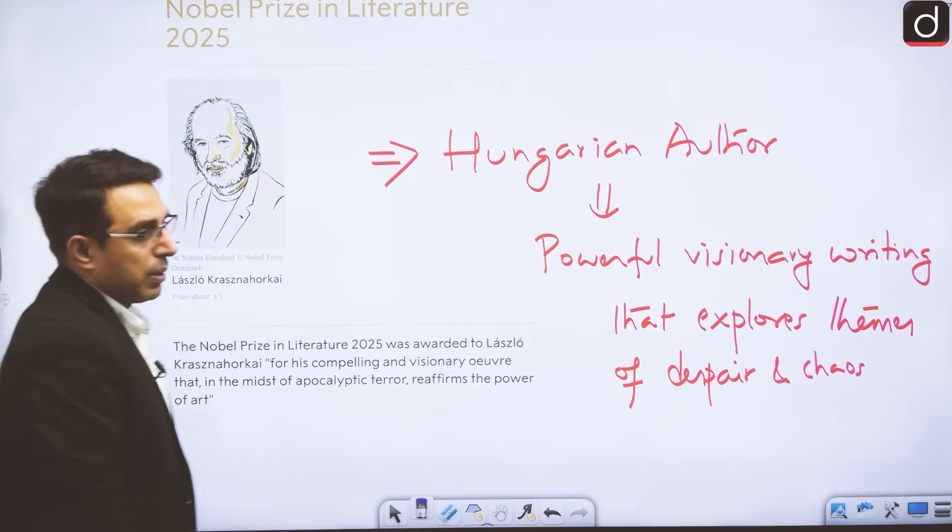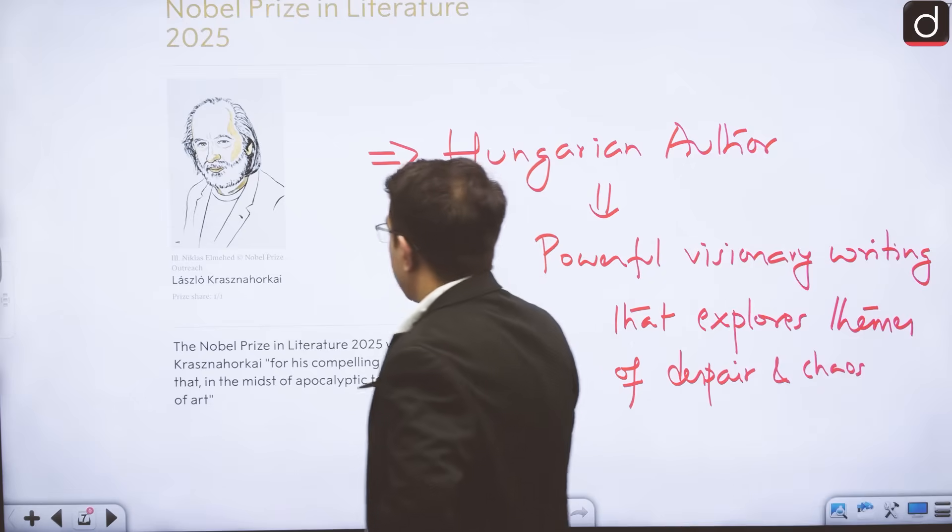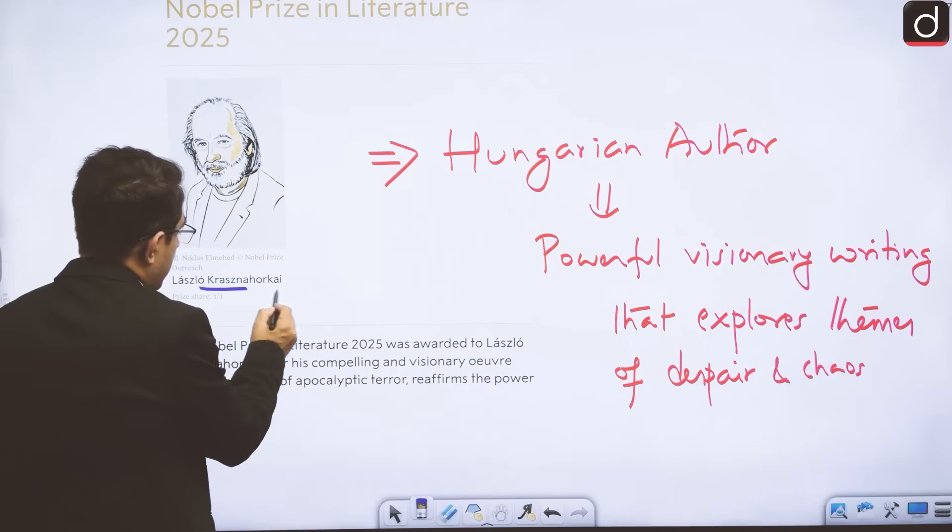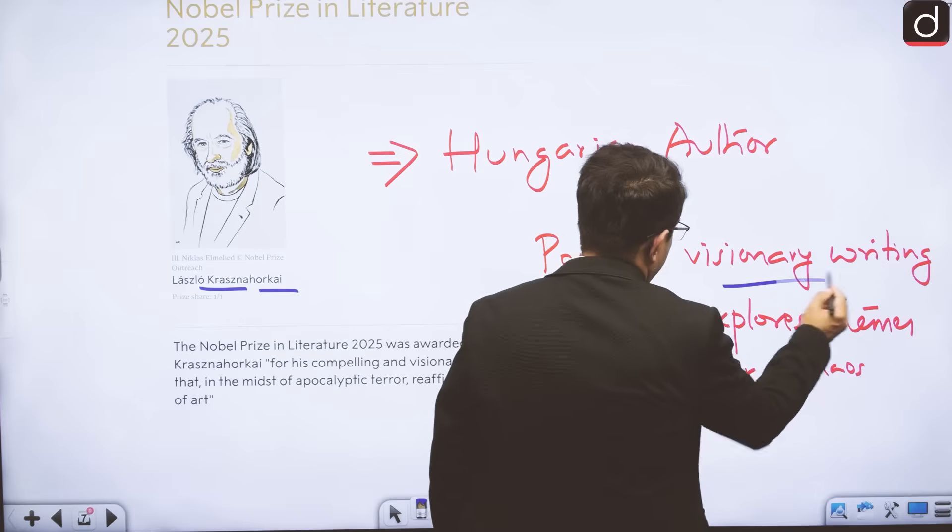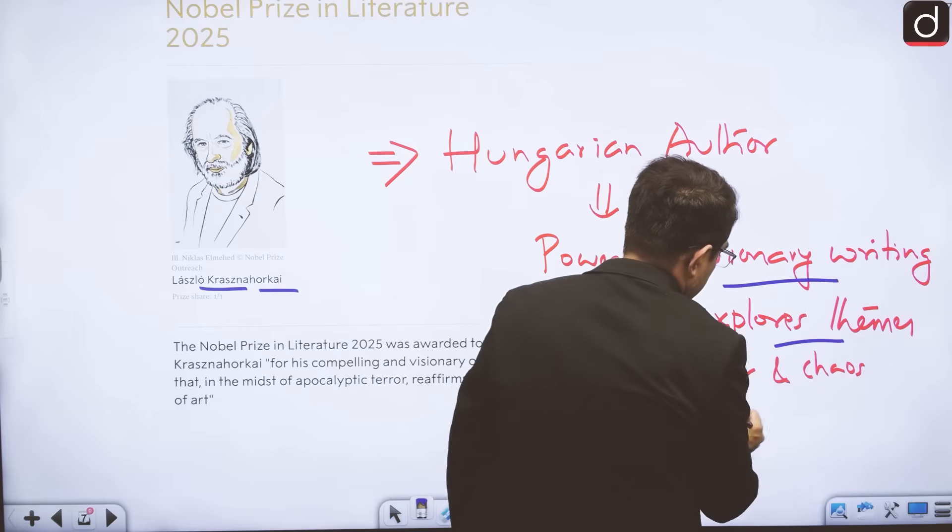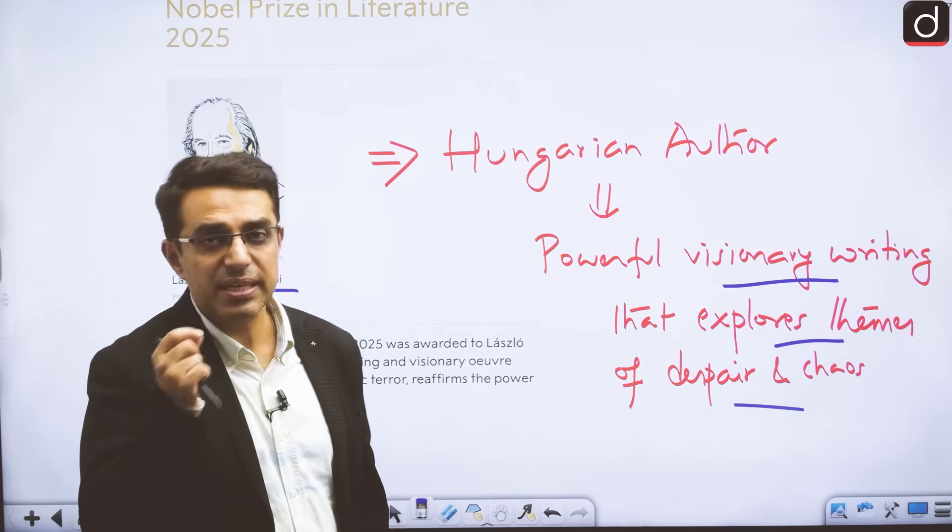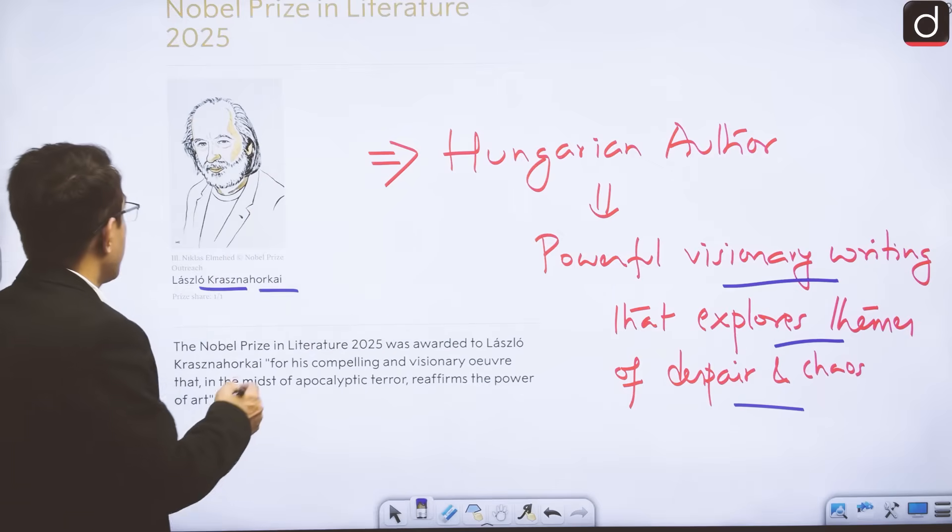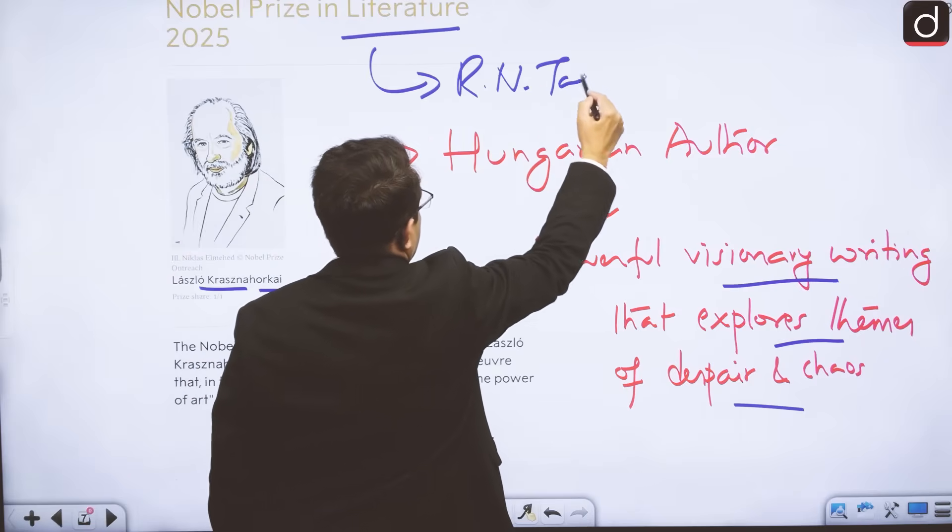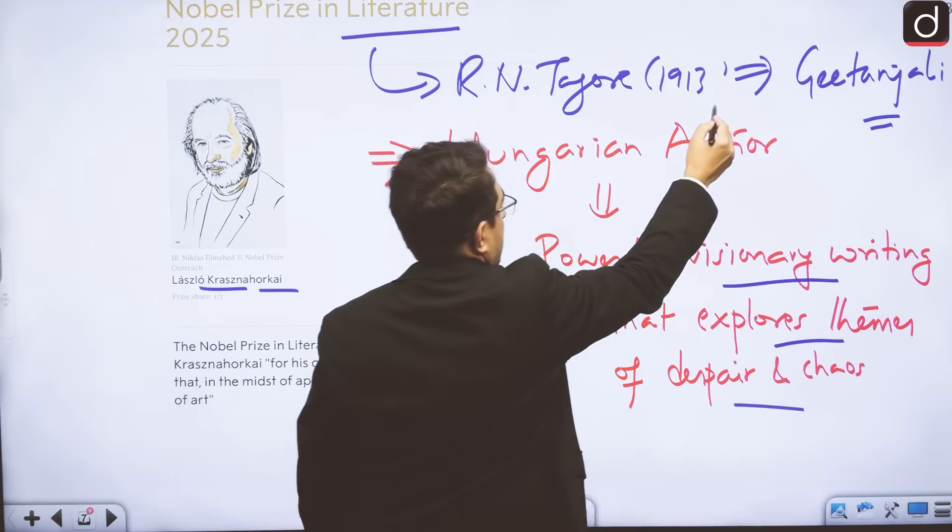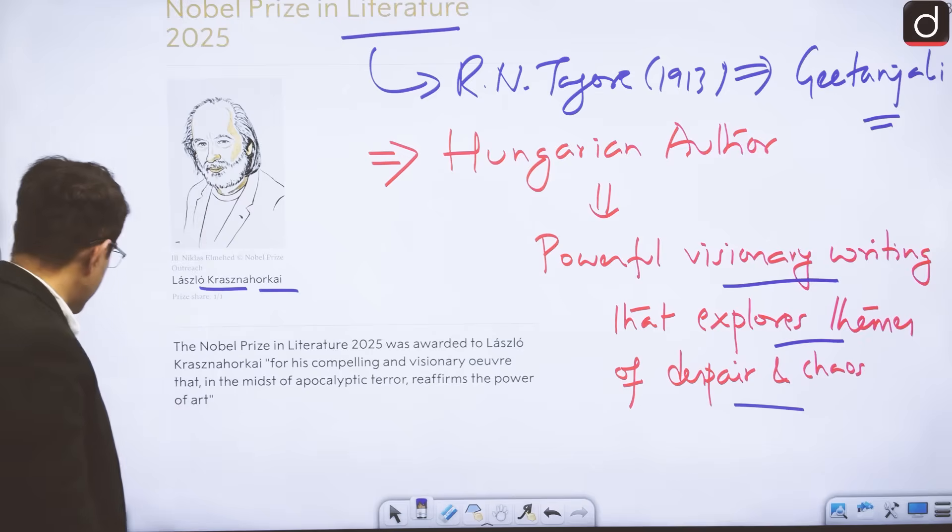Now we come to the Nobel Prize for Literature. Nobel Prize for Literature has been given to a Hungarian author, Laszlo Kras Nahorkai. It has been given to him for visionary writing which explores various themes of despair and chaos. Here we should remember one thing - that the first Indian to receive Nobel Prize was also in the field of literature, and he was none other than Sri Rabindranath Tagore in 1913. In 1913, Rabindranath Tagore received the Nobel Prize for Literature for Gitanjali - he is the first Indian to receive it.